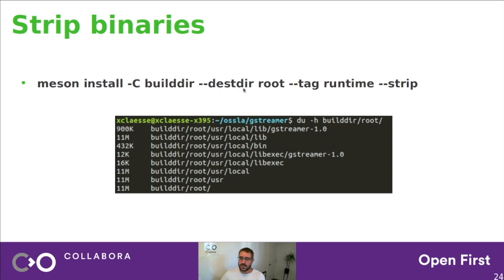The next step, obviously, is to strip the binaries. Meson install supports the --strip command line option. That actually divides by four the size of your libraries — you are down to 11 megabytes. That's starting to look good.